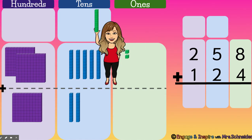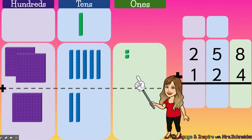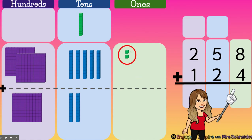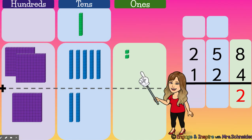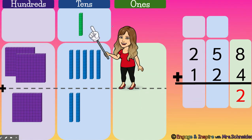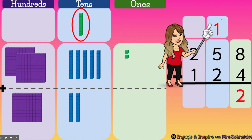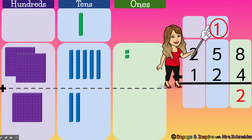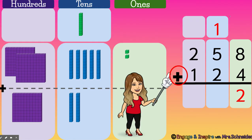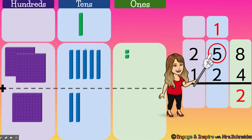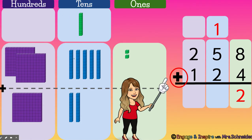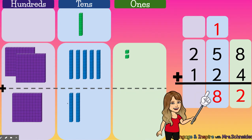I'm going to carry that 10 over to the tens place. I have two ones left, so I'm going to write a two in my ones place. And we can't forget that we carried one 10, so I'm going to write one in my tens place here. Now I'm going to add my tens: one 10 plus five tens plus two tens equals eight tens.